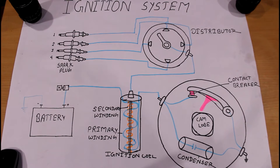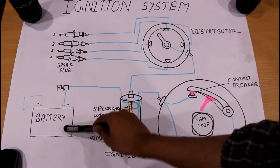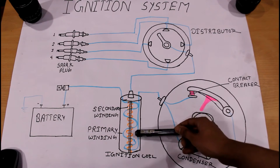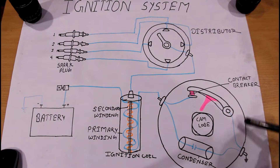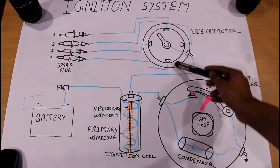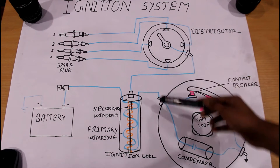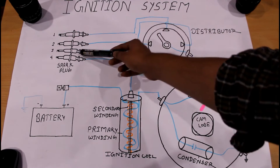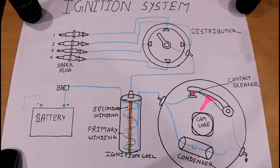The basic parts of an ignition system are: battery, ignition coil, contact breaker, condenser, distributor, and spark plug. And the most important part is the engine cylinder.